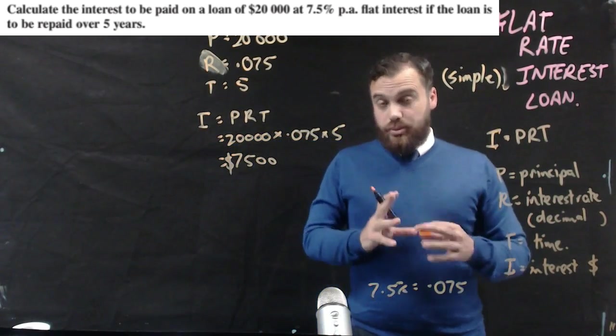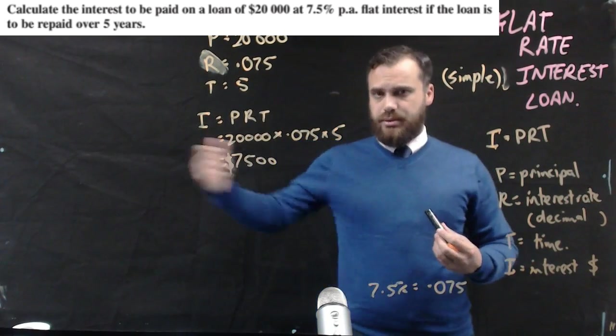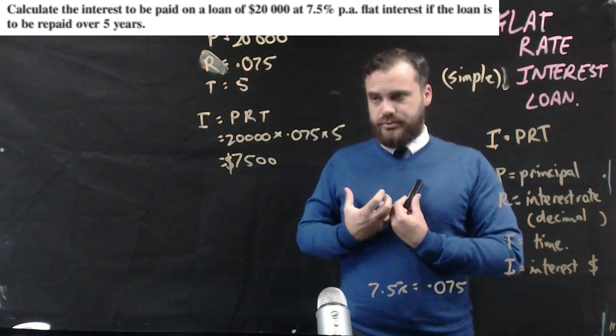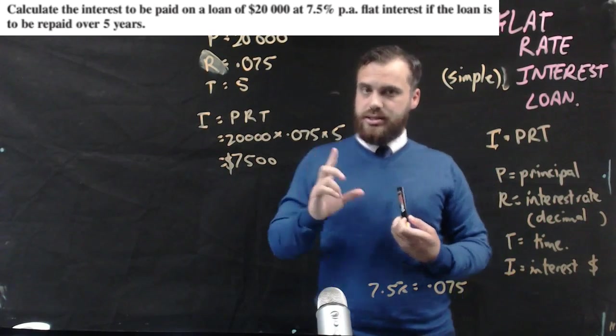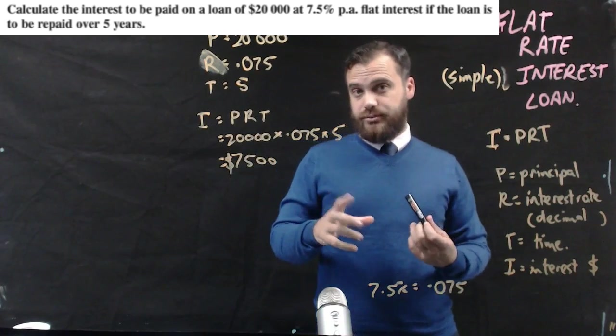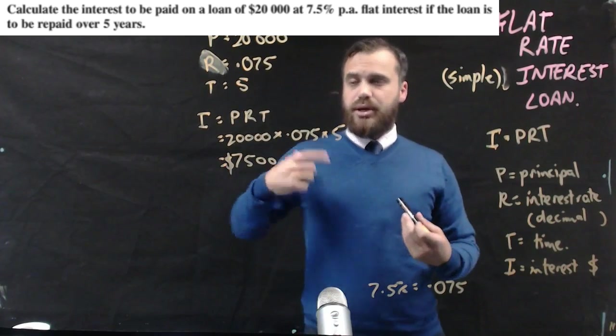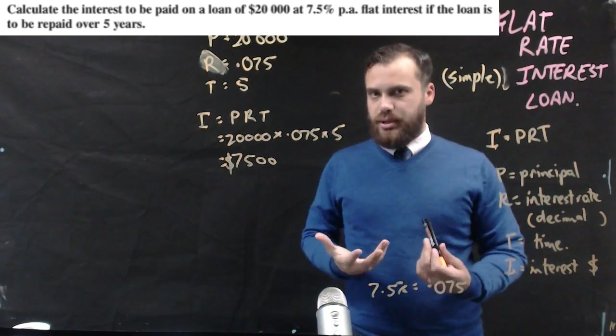Okay stop and think about what that means to us. I borrow $20,000 from someone. I've got 20 grand. Five years later I need to pay back interest of $7,500 because I've been holding on to someone else's money. So I need to pay them some interest but I also need to pay them the original amount back.